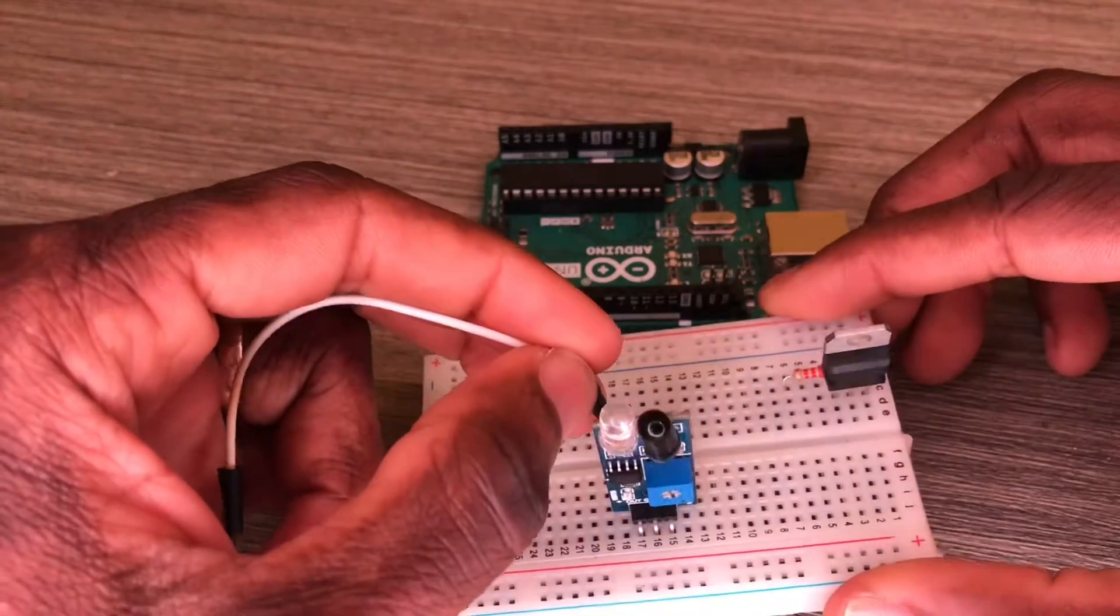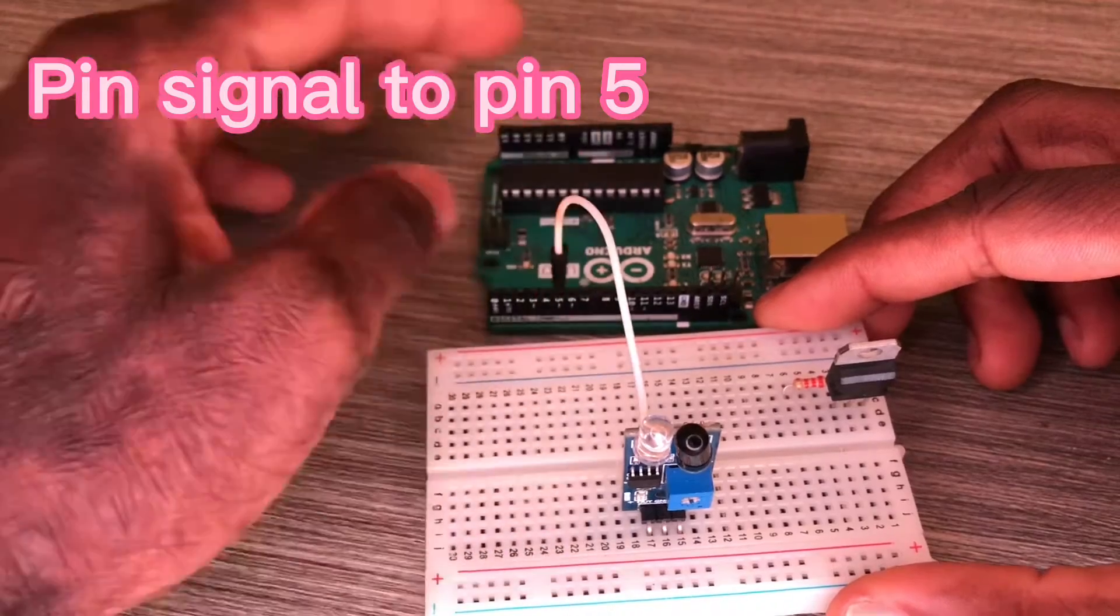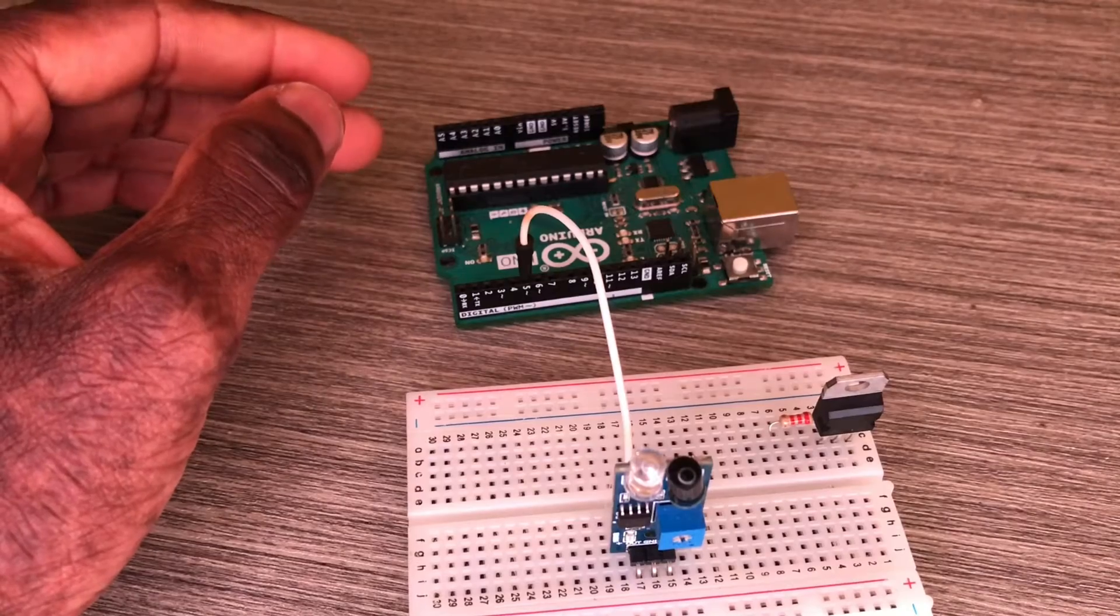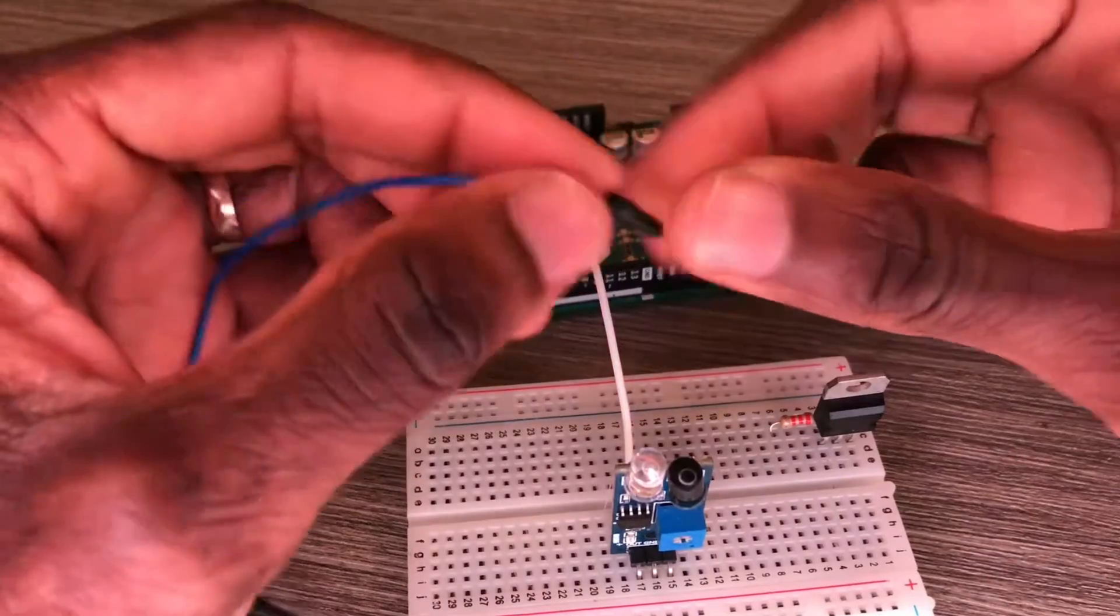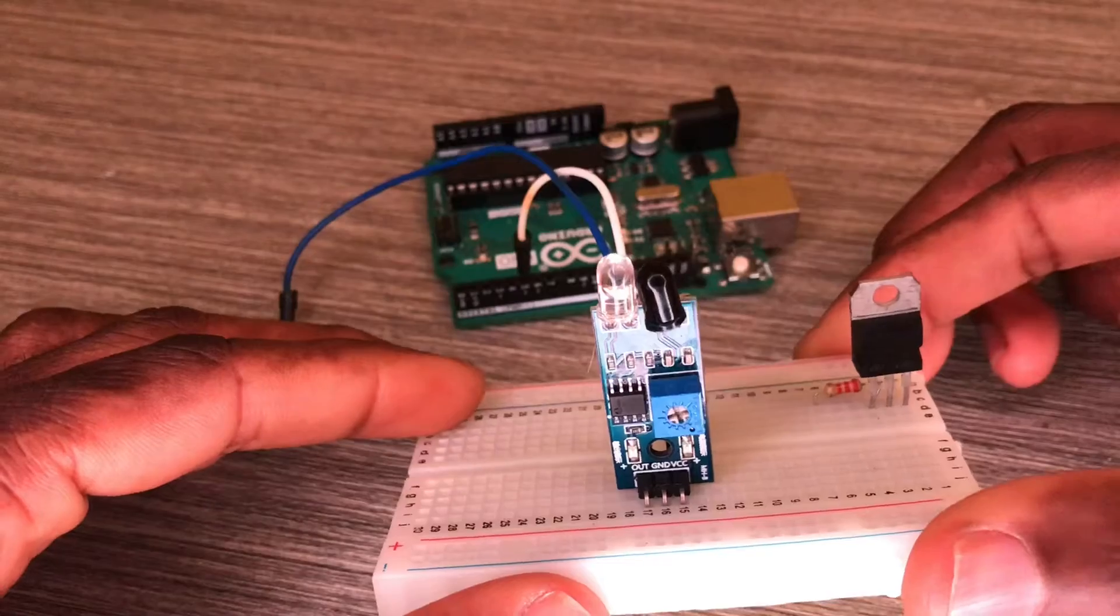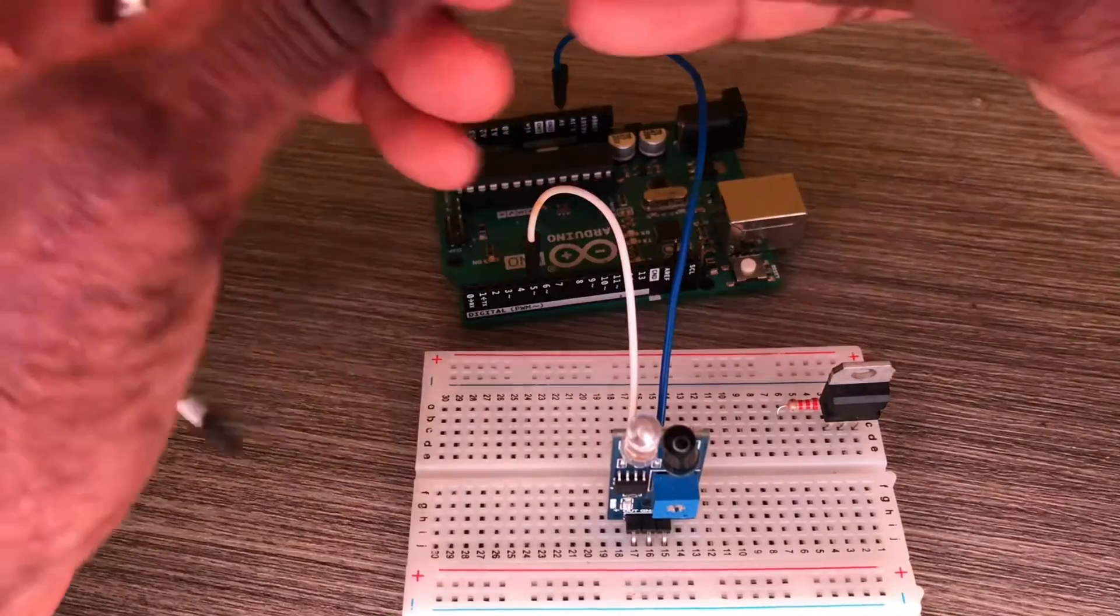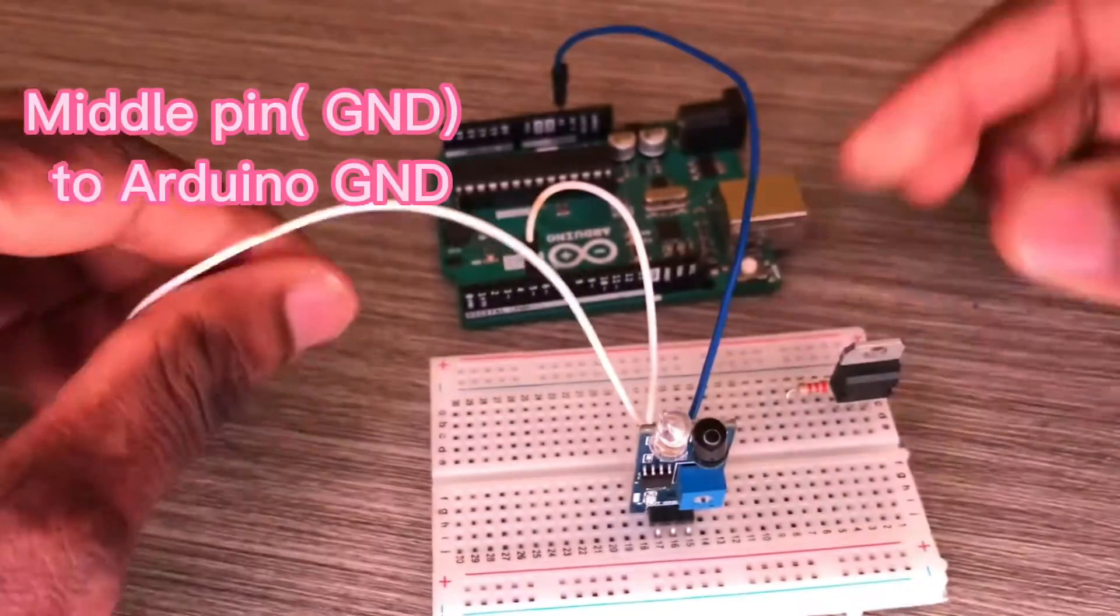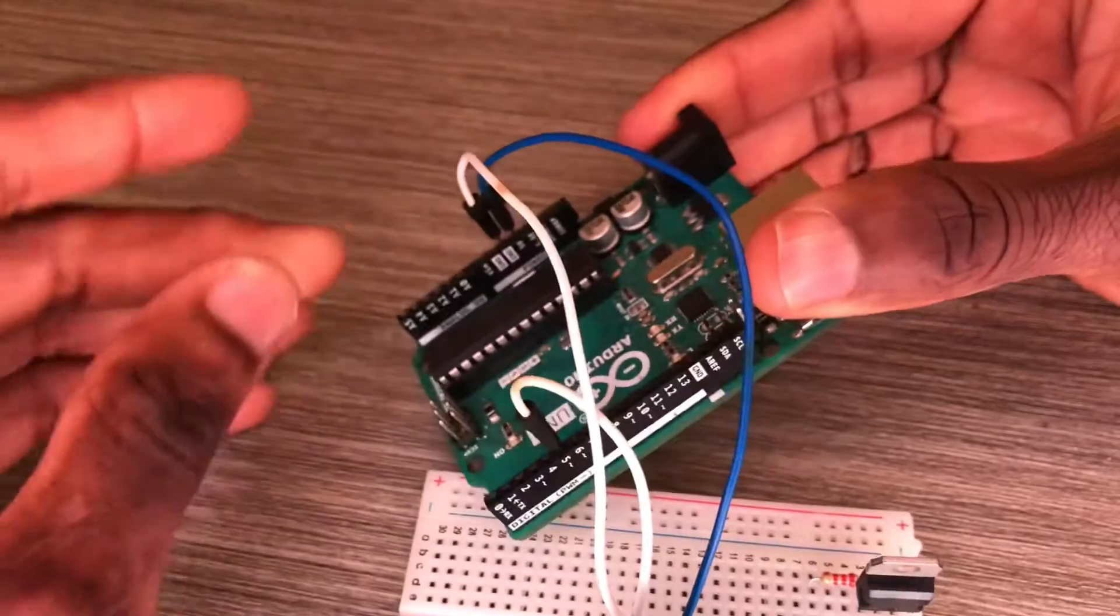This cable goes from OUT to pin 5 of the Arduino Uno - that's the signal. That cable goes from VCC to Arduino 5 volts. And the middle pin of the sensor is the ground - it's going to ground.